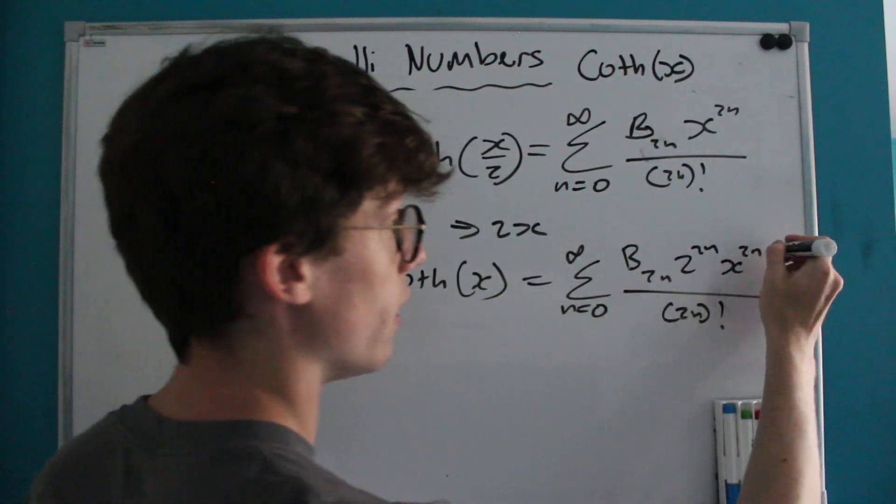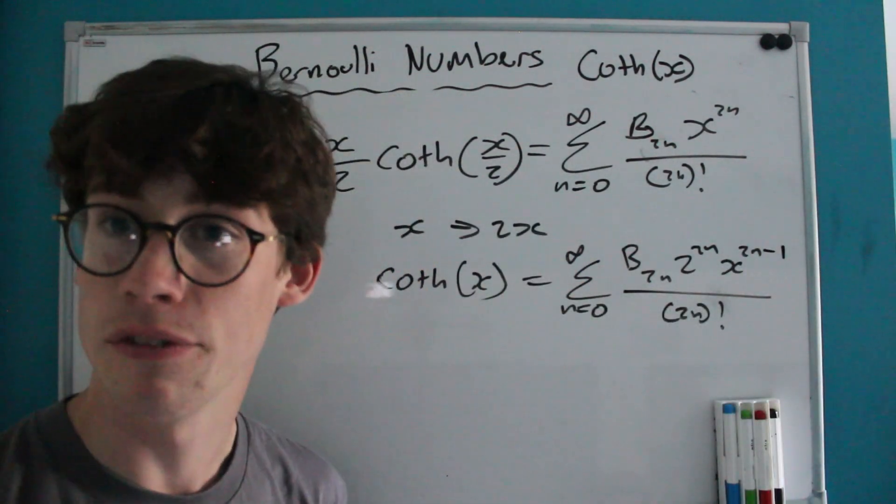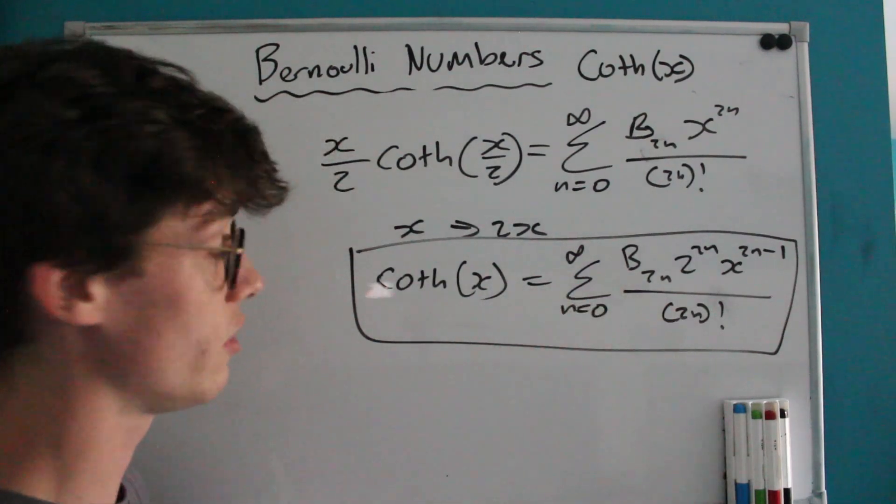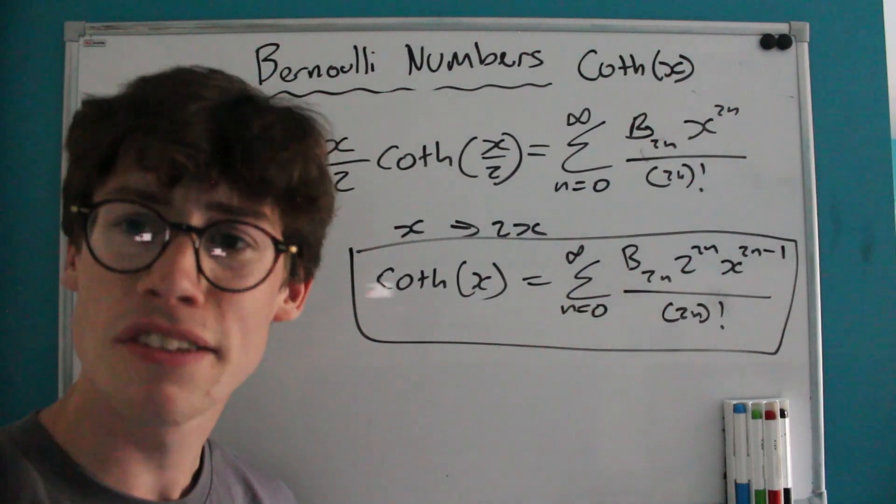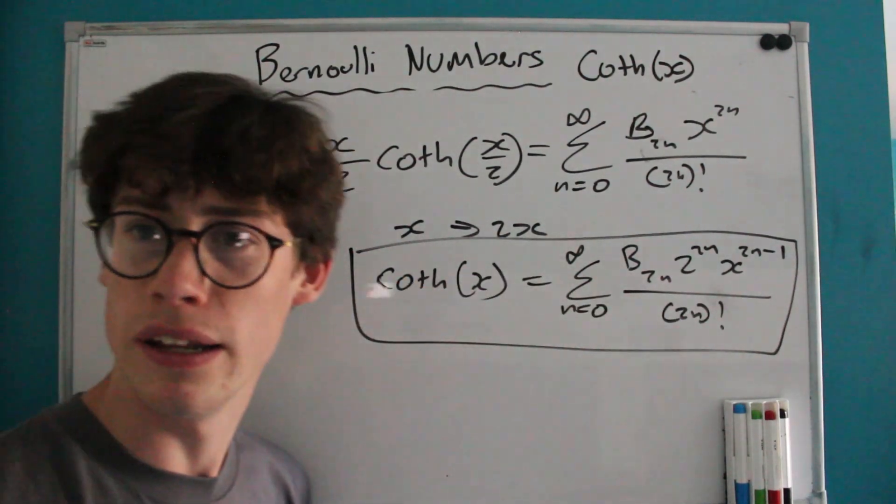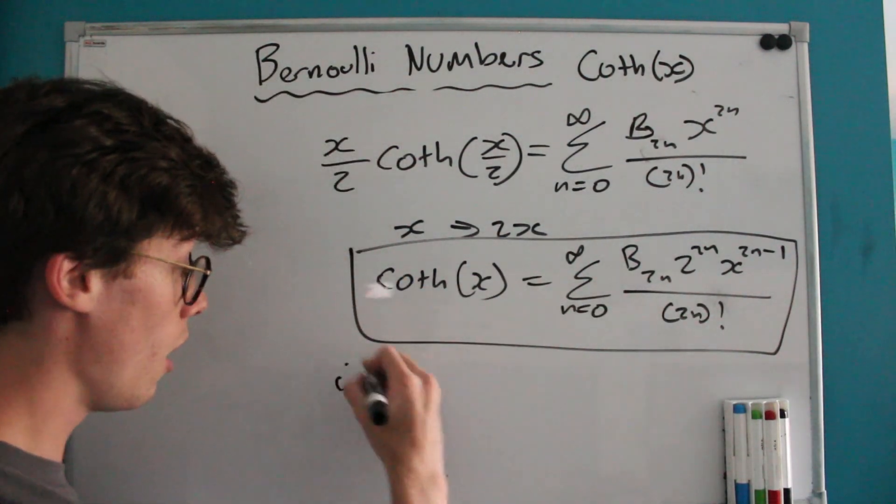Because we've done that, of course we can actually use this McLaren series for hyperbolic cotangent of X to find one just for cotangent of X, because—and this is something I can leave to you to verify for yourself—but I times coth(iX) is the same thing as just cot(X).